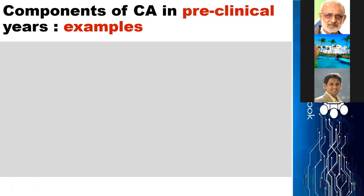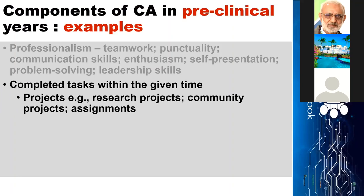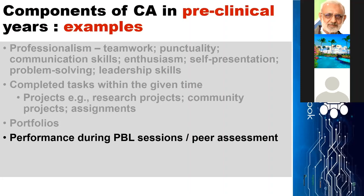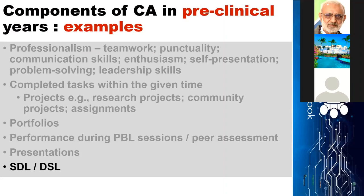Examples of continuous assessment in pre-clinical years include professionalism, completed tasks within the given time such as research projects, community projects, assignments, and portfolios. Also included is performance during small group sessions like problem-based learning sessions, peer assessment, presentations, and self-directed learning and directed self-learning.